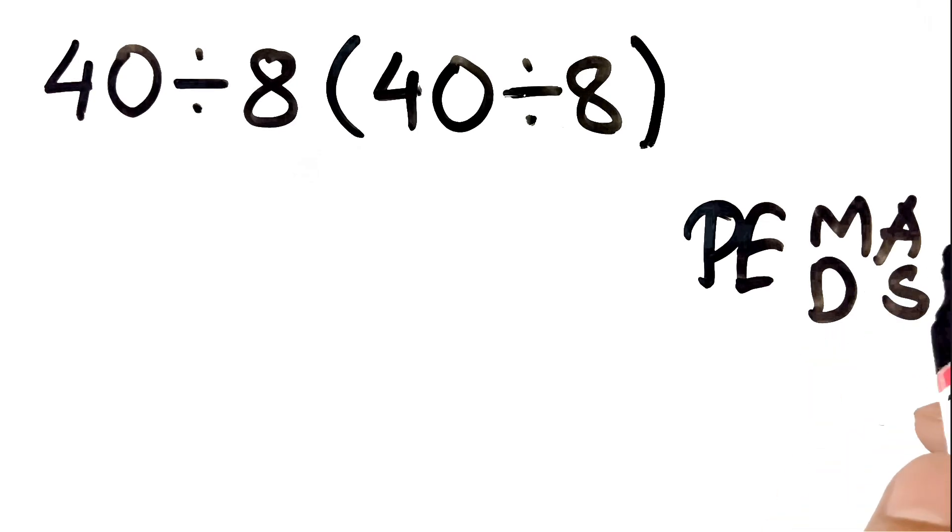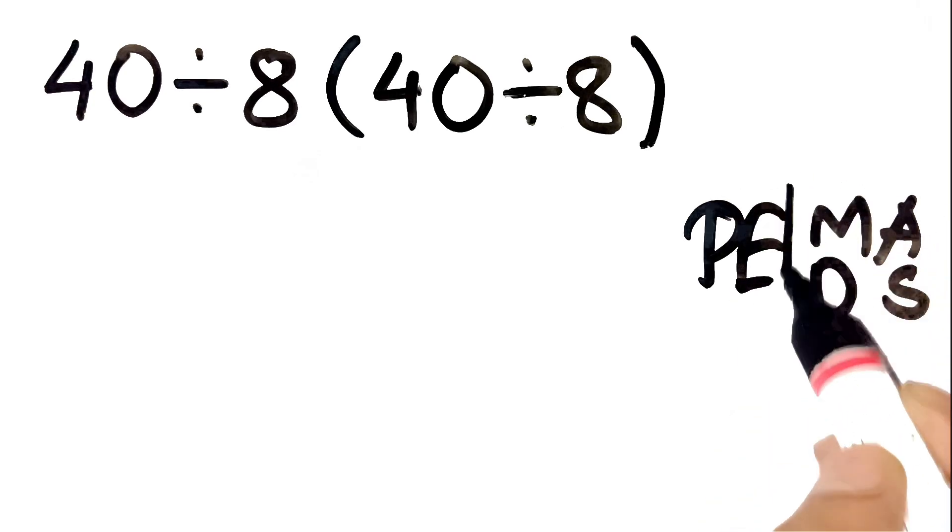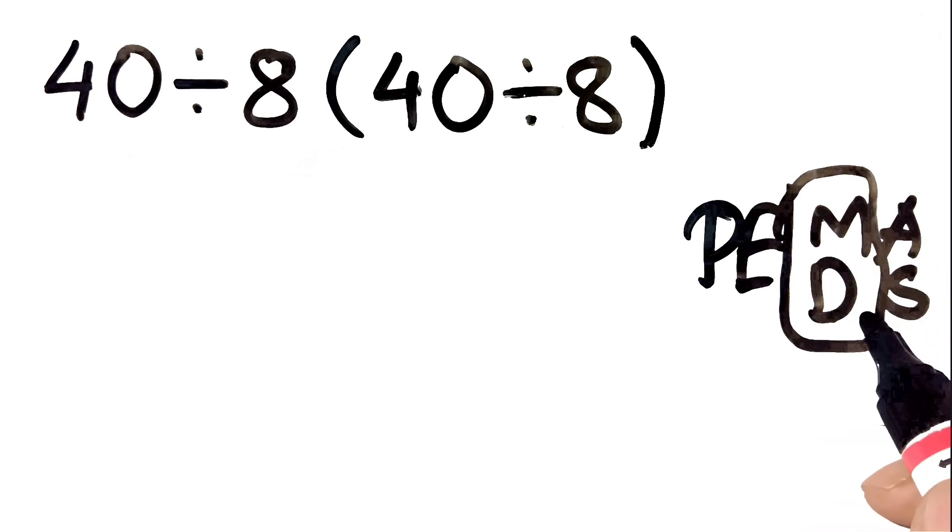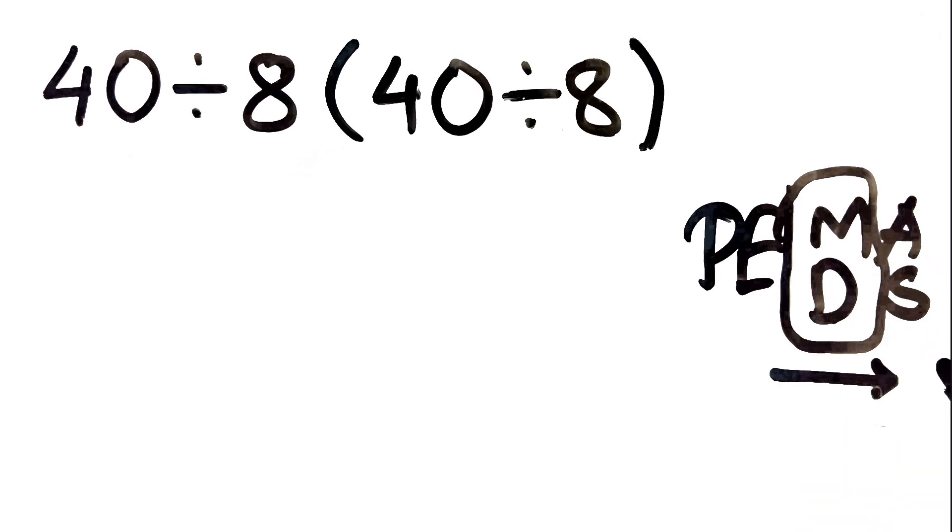But uh-oh, here's the sneaky part. Multiplication and division are equal priority. And we always go left to right. That's where most people mess it up.